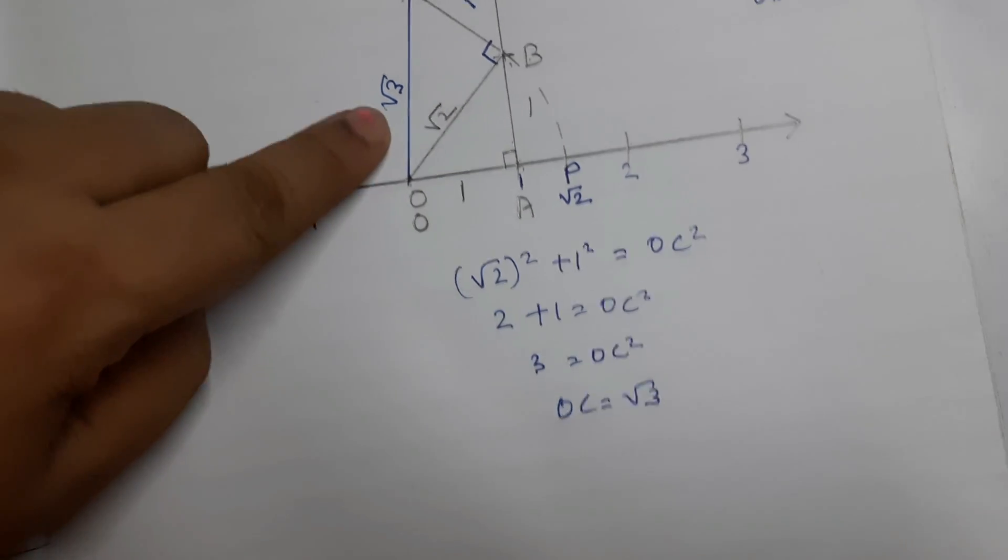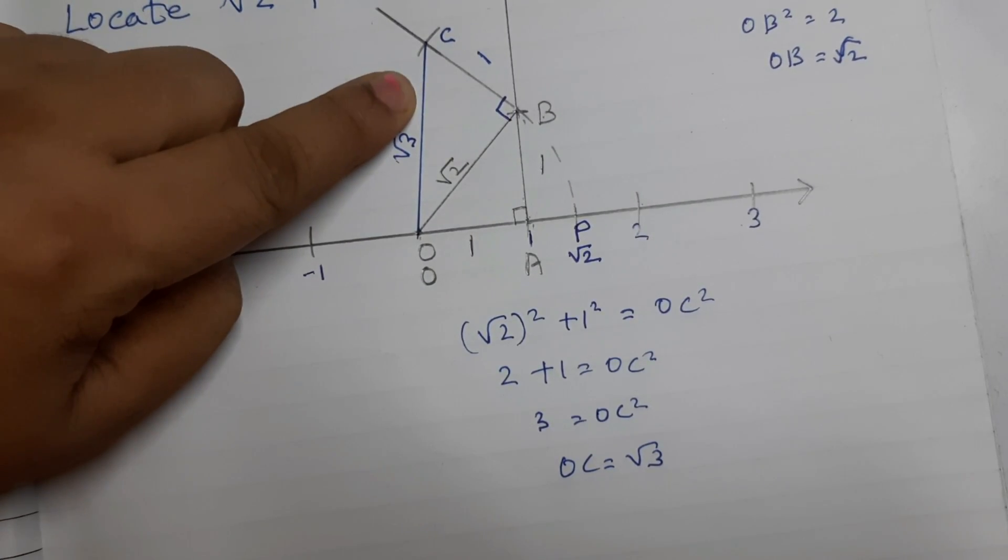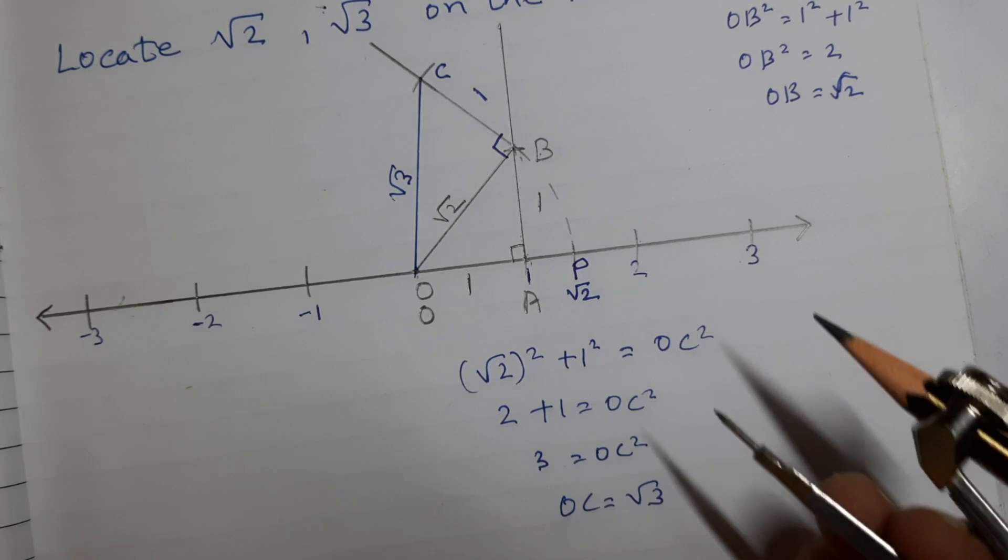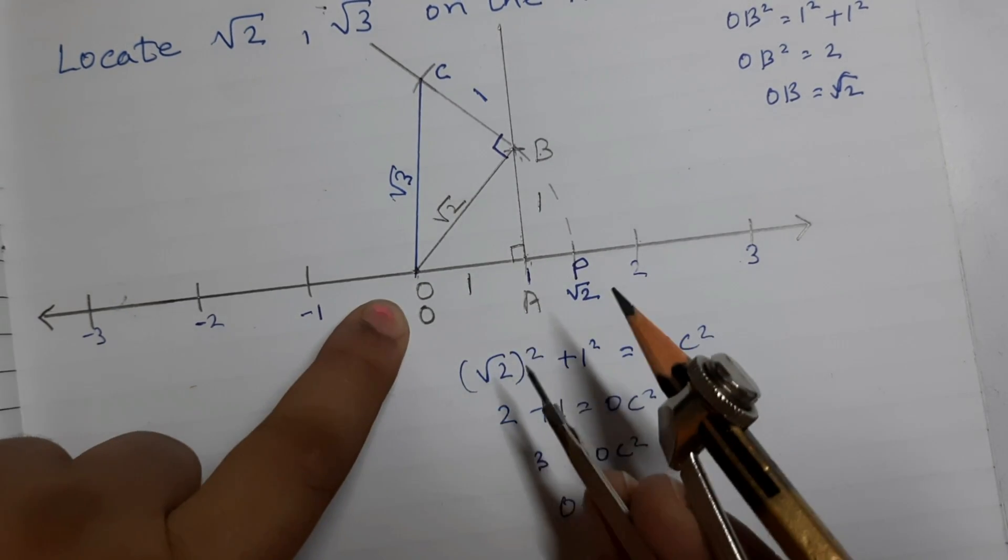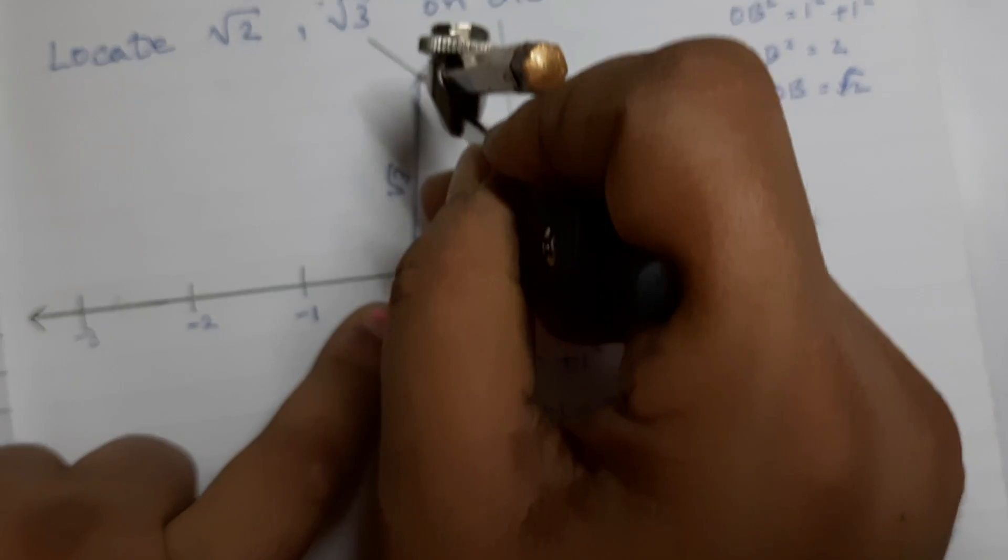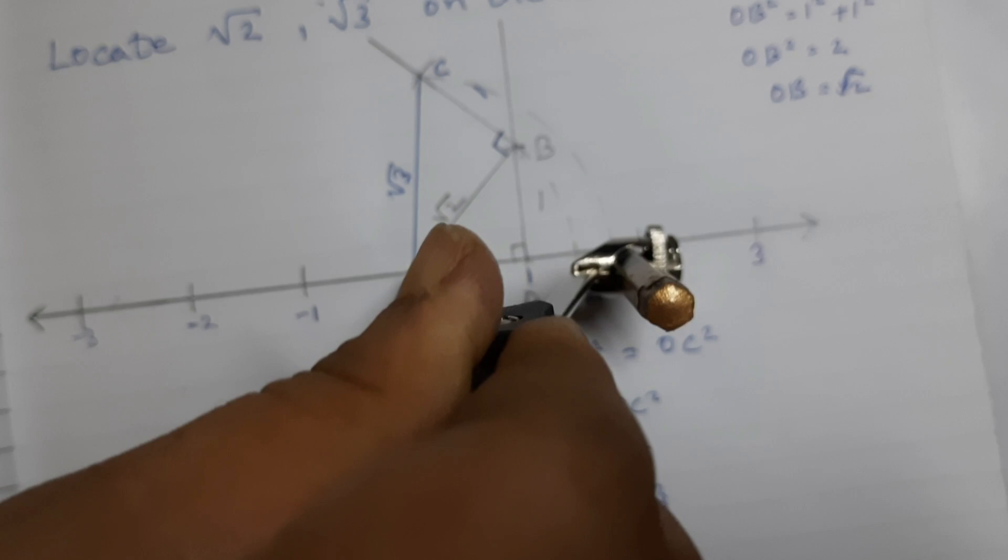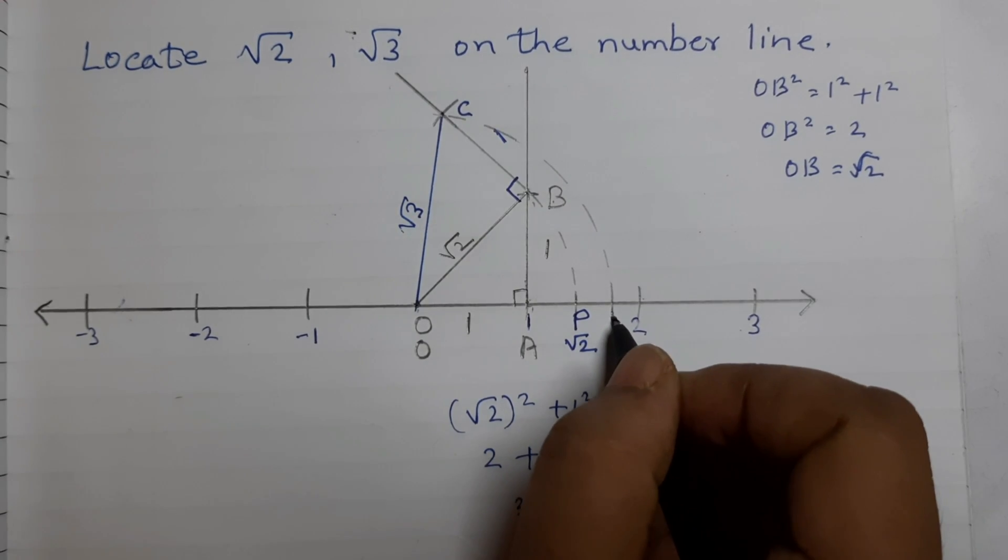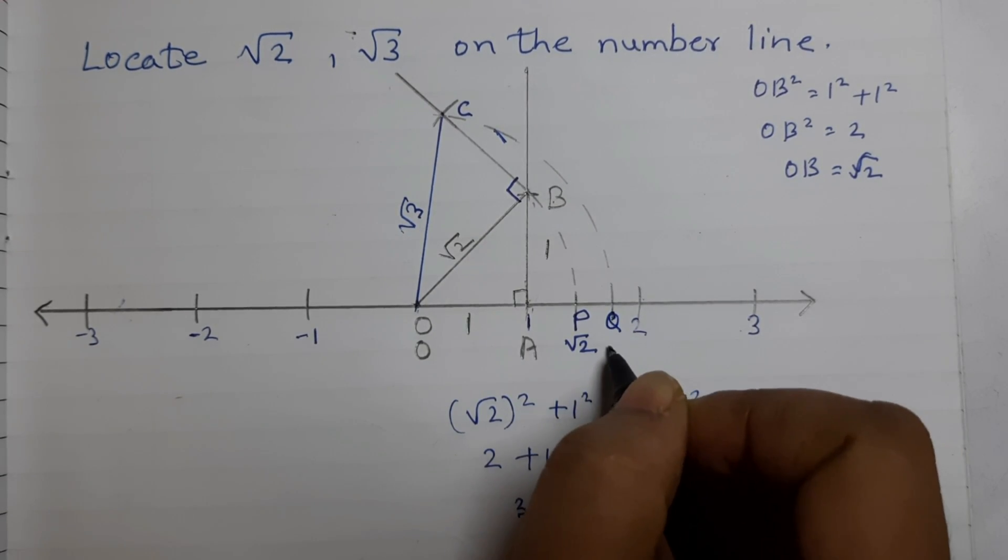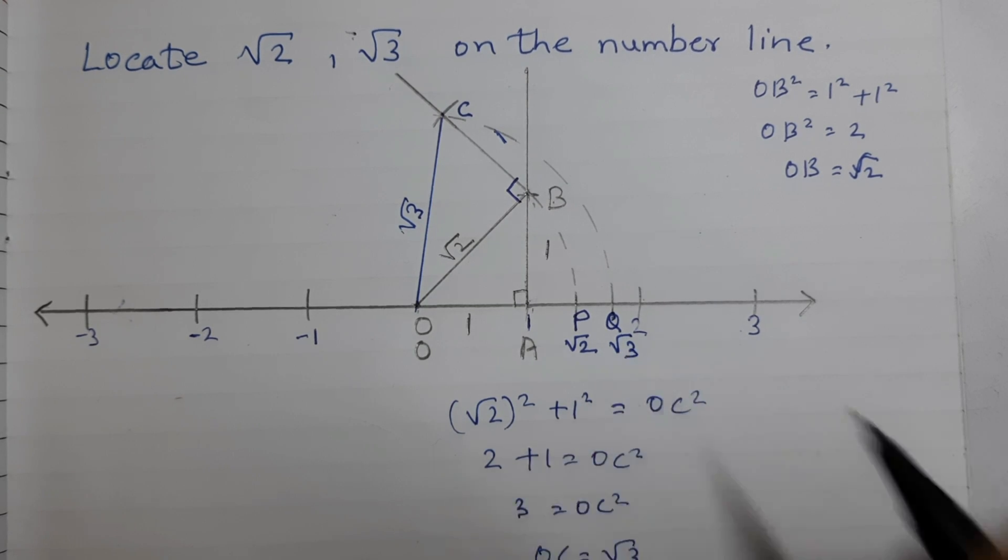So, this length here is square root of 3. Now, using a compass with center O and radius O, C, draw an arc on the number line. Let's say this point is Q. Q represents square root of 3.